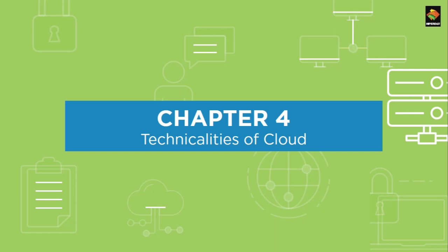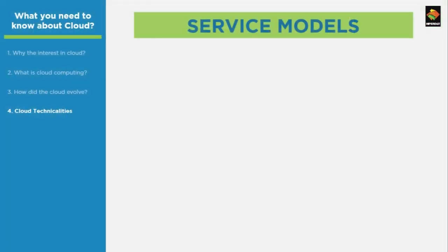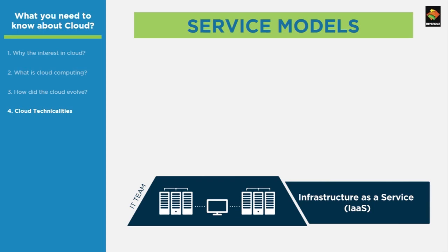In this module we will explore the technical details of cloud computing. As per NIST, cloud computing can be divided into three different service models. Infrastructure as a Service, or IaaS, is a business model in which the infrastructure resources and storage are provided by the cloud service provider — the user does not have to manage the underlying infrastructure. Some examples of IaaS are Alibaba Cloud, Amazon Web Services, and Microsoft Azure.